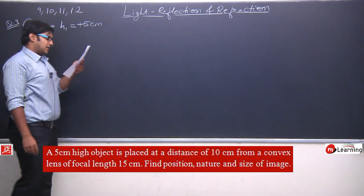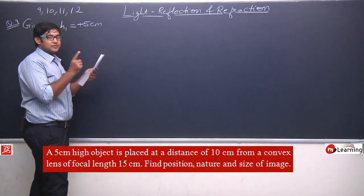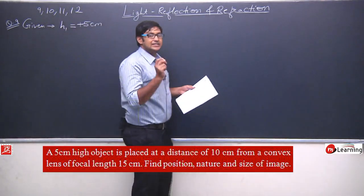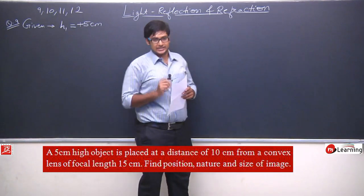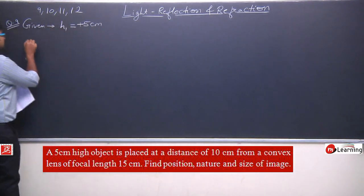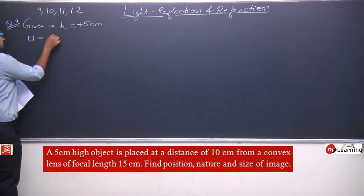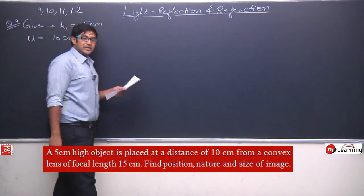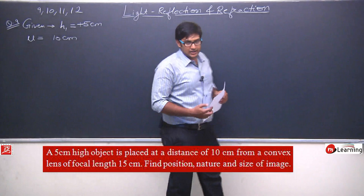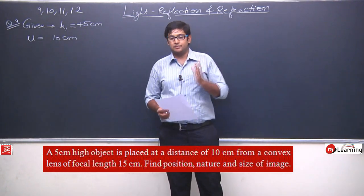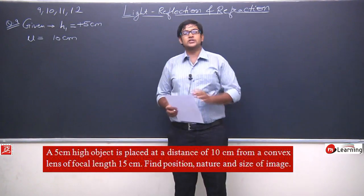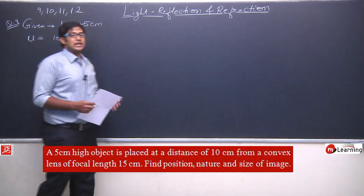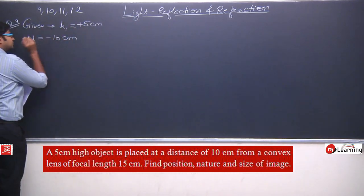A 5 centimeter high object is placed at a distance of 10 centimeters from a convex lens. Ye 10 centimeters jo diya hai, this is basically the object distance. Object ko hum left mein hi rakhenge. Toh left mein rakhenge matlab, pole se left side mein move karne pe object tak pahunchenge. This distance will be in the negative direction, opposite to the direction of light. That is why u is equals to minus 10.